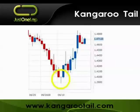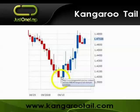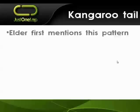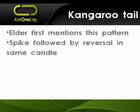The kangaroo tail is one I don't currently trade but did extensive research on around 2005–2006. It's quite rare but a fairly strong reversal pattern. It literally looks like a kangaroo tail — it gives you a strong sell-off and then a reversal back to pretty much where it opened. The body of the candle is very small; it might open and close at the same level, but it has that strong tail below it. Alexander Elder first mentioned kangaroo tails in his book Come Into My Trading Room. Critically, this spike and reversal happen within the same candle.